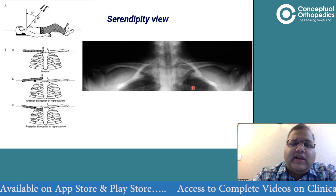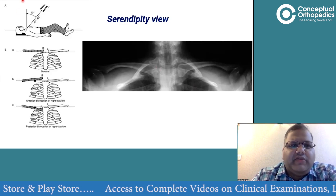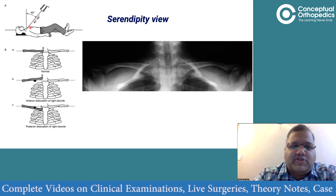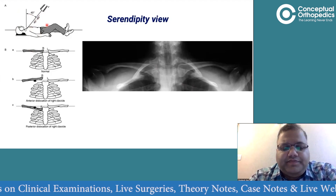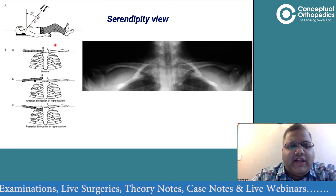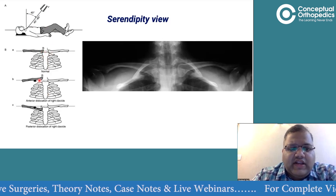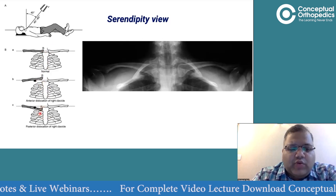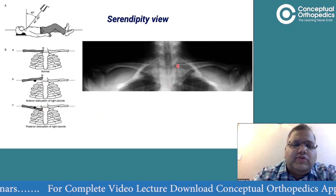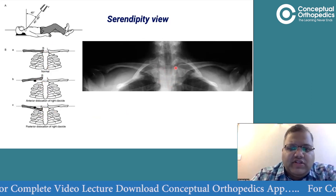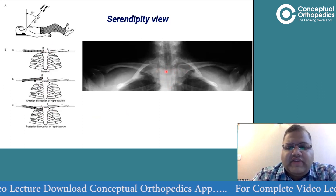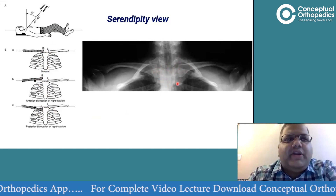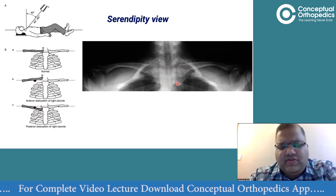The other radiographic view that could be asked is the serendipity view: the patient lies supine and the beam is projected 45 degrees cephalad toward the face. This view differentiates anterior from posterior dislocation. Normally both clavicles are equidistant from the sternum. In anterior dislocation the clavicle goes upward relative to the sternum; in posterior dislocation it goes downward. They may show this image and ask you to identify the type of dislocation.